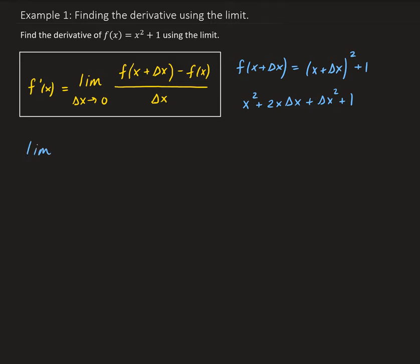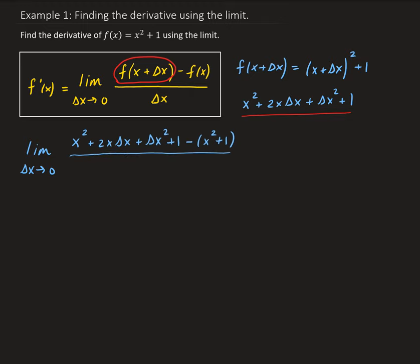So we have the limit as delta x approaches 0 of: x squared plus 2x delta x plus delta x squared plus 1 — that part corresponds to f(x + delta x) — minus the original function. You have to be careful to subtract everything in that function, so it's a good idea to put parentheses around it. All of this is divided by delta x.